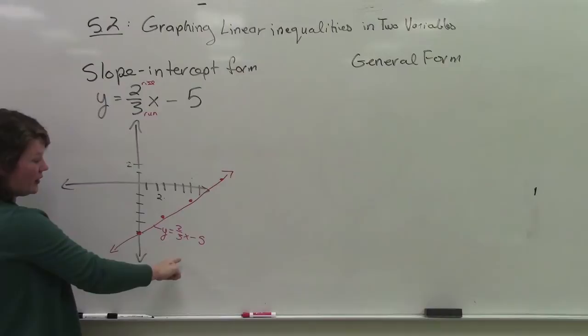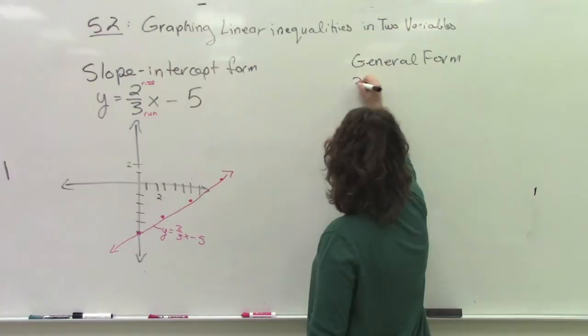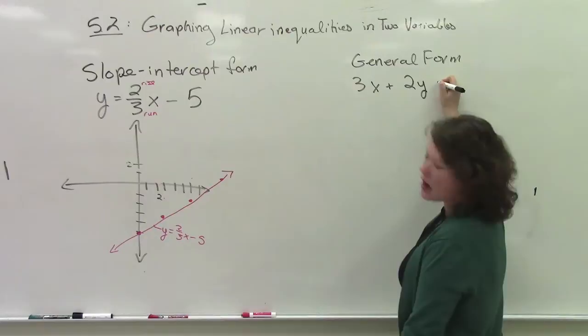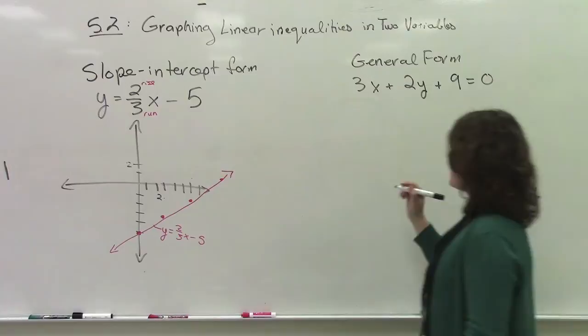The general form is very much like the general form of the parabola. We have, so here's an example, 3x plus 2y plus 9 equals 0. So we have set this thing equal to 0, and we have our x terms, our y terms, and our constant here. Easiest way to do this is just graph by intercept.